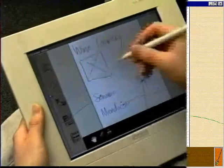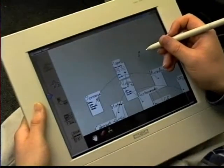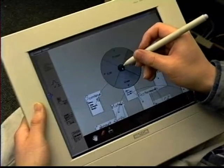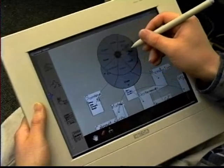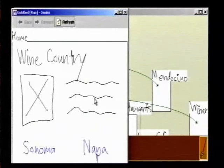Finally, Bob wants to run through his web design to get a feel for the interaction. This can be done in Denim's run mode. Bob taps on the home page, brings up a pie menu, and chooses Run from the project menu. A separate web browser window opens with the sketch of the home page.